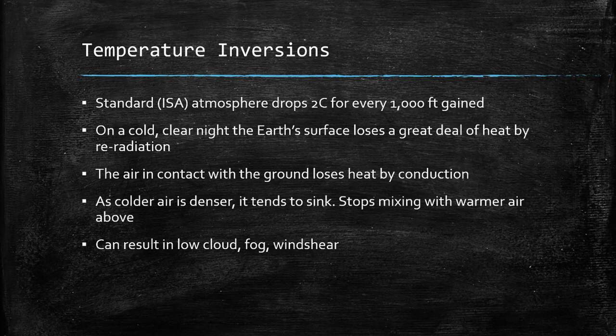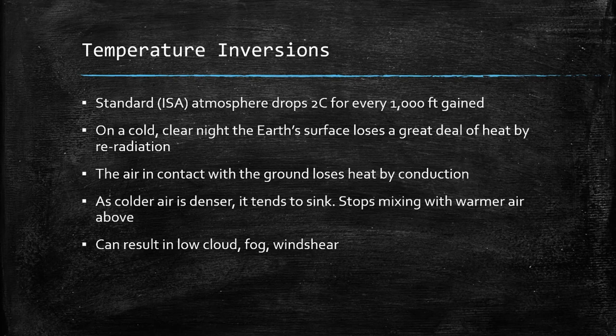This terrestrial re-radiation can result in a phenomenon known as temperature inversion. While ordinarily, air decreases in temperature as altitude is gained, on cold, clear nights, the Earth's surface can lose a lot of heat through re-radiation. This can result in the surface cooling air directly in contact with it. As cold air is denser than warmer air, it tends to sink. This results in the cooler air no longer mixing with the warmer air above it. This creates a boundary layer between the two bodies of air, typically no taller than a few hundred feet. These temperature inversions can result in low clouds, fog and wind shear, a topic which we'll cover in greater detail in the future.